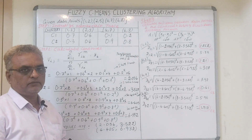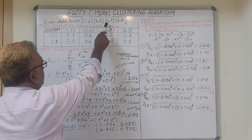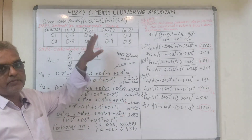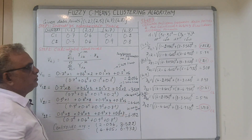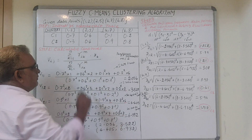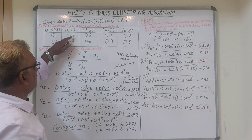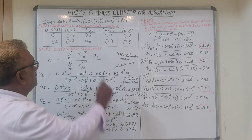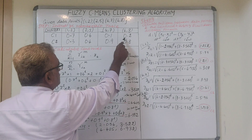Let me explain this algorithm with the help of an example. The given data points are (1,2), (2,5), (4,7), (6,8). The first step is to initialize the membership table. We have two clusters, C1 and C2. The membership values are assigned randomly, keeping in mind that their sum must not exceed 1. For example: 0.7, 0.3 for the first point; 0.6, 0.4; 0.1, 0.9; and 0.2, 0.8 for the remaining points.